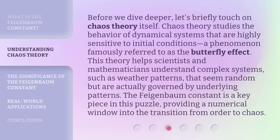Before we dive deeper, let's briefly touch on chaos theory itself. Chaos theory studies the behavior of dynamical systems that are highly sensitive to initial conditions, a phenomenon famously referred to as the butterfly effect. This theory helps scientists and mathematicians understand complex systems, such as weather patterns, that seem random but are actually governed by underlying patterns. The Feigenbaum Constant is a key piece in this puzzle, providing a numerical window into the transition from order to chaos.